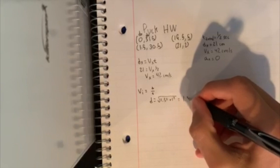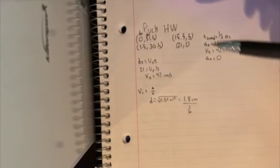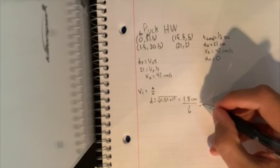Now if we divide that by 1/30th, because the time between these two frames is 1/30th of a second, we get that v-initial equals 54 centimeters.